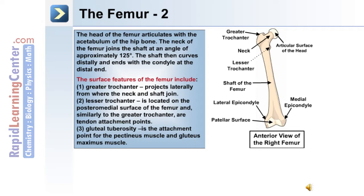The neck of the femur joins the shaft at an angle of approximately 125 degrees. The surface features of the femur include: number one, the greater trochanter, which projects laterally from where the neck and the shaft join; and number two, the lesser trochanter, which is located on the posterior medial surface of the femur. Similarly to the greater trochanter, these are tendon attachment points.